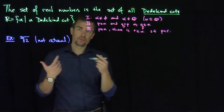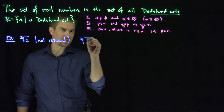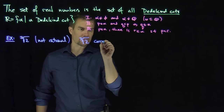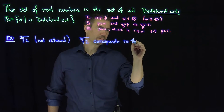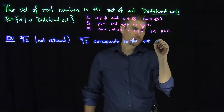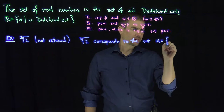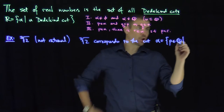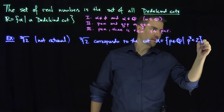The third root of two corresponds to the cut — let's call it alpha — which is the set of p in Q such that p cubed is less than two.